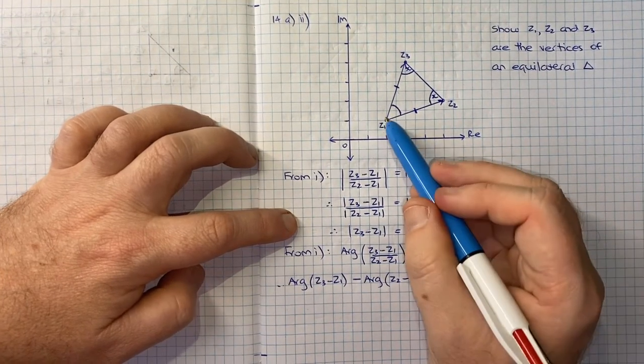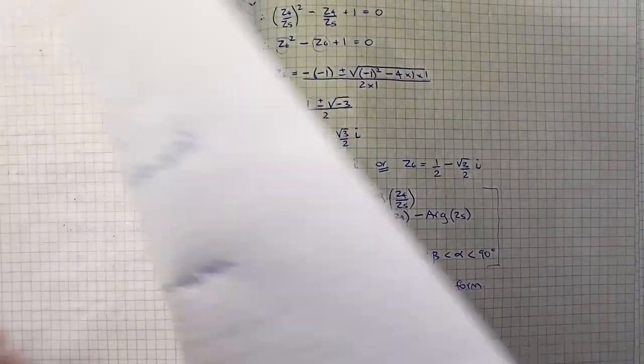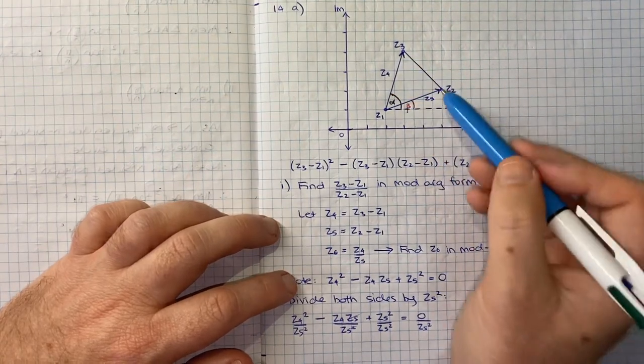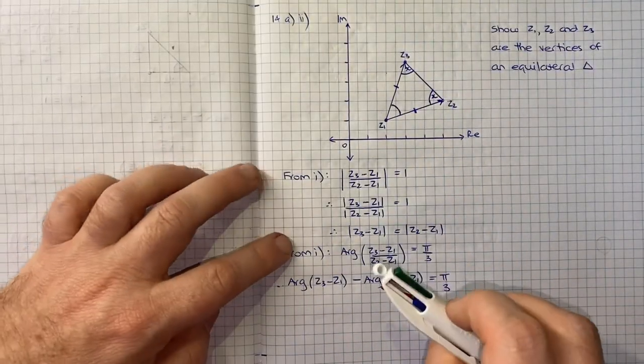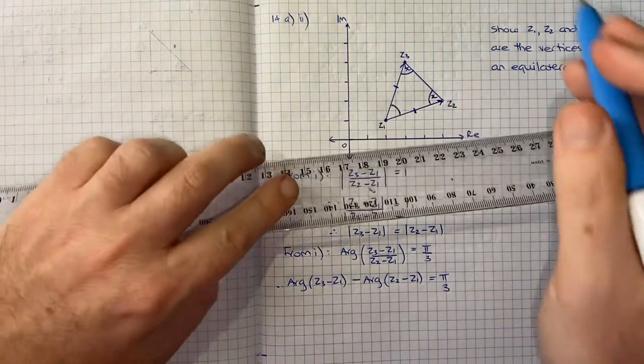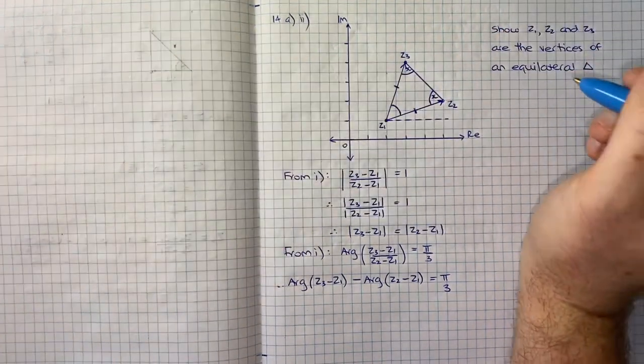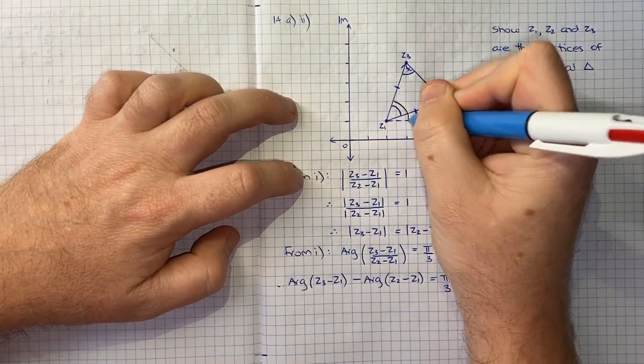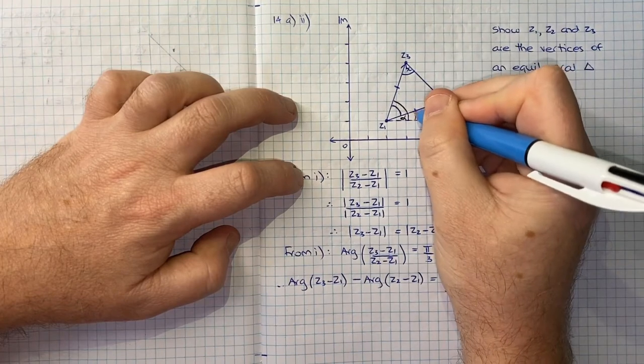And remembering what we looked at in the first part where we thought about the argument of Z3 minus Z1, the argument of Z2 minus Z1, we called those alpha and beta, and it might be helpful to use a similar notation. So I'll just draw my line parallel with the real axis.